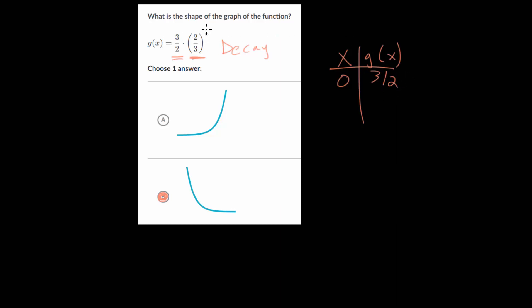We plug in one, we get 3 halves times 2 thirds to the first, which is just 2 thirds. And multiplying these together, since they're reciprocals, this is equal to one. And notice we went from 1.5 to one, so it's already decreasing.